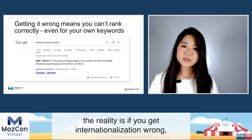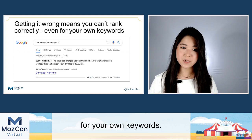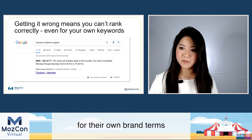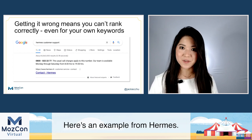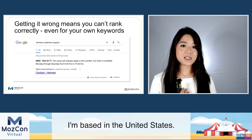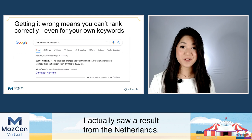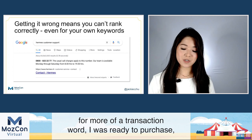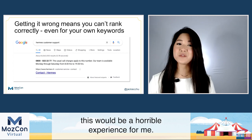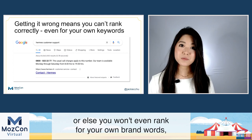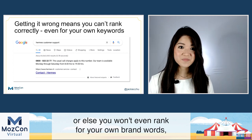What's at risk if you get this wrong? If you get internationalization wrong, you can actually stop ranking competitively for your own keywords. I've seen sites rank as low as six or seven for their own brand terms. Here's an example from Hermes — I did a search for 'Hermes customer support' from the United States, and I actually saw a result from the Netherlands. Imagine if I was searching for a transactional query — this would be a horrible experience. It's really important to get internationalization correct, or you won't even rank well for your own brand words.